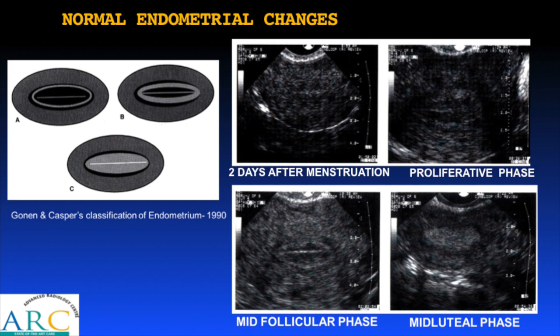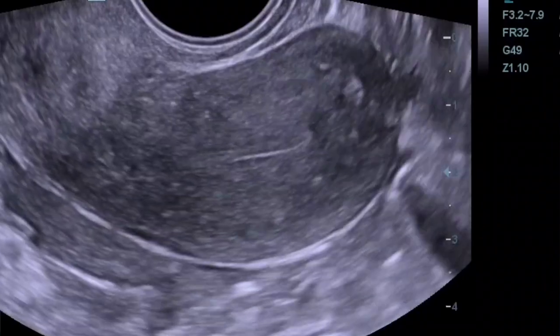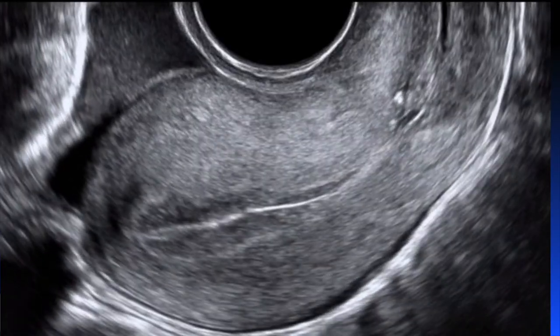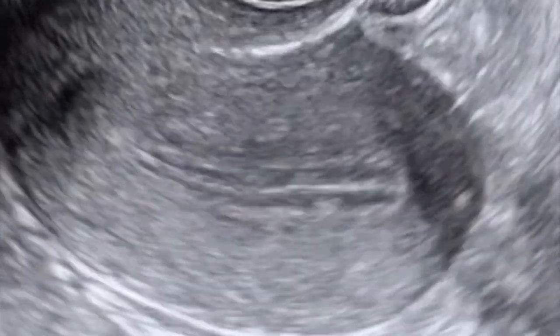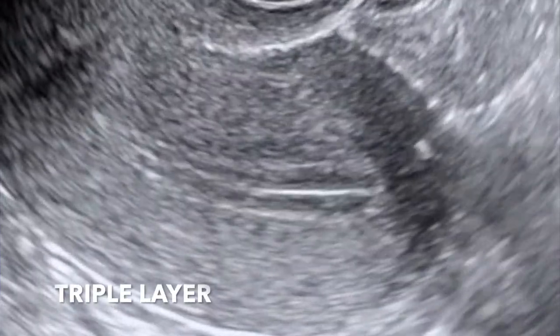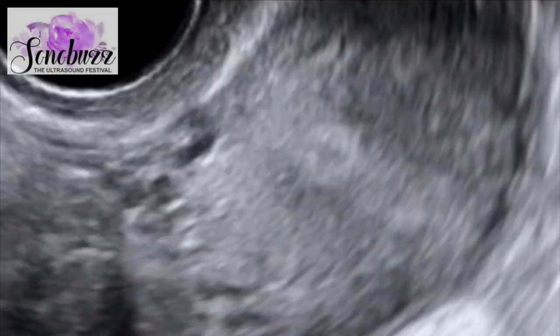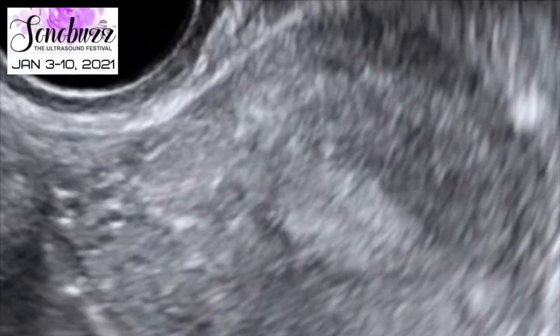The endometrium shows very signature appearances on ultrasound, and it is possible to predict the day of the menstrual cycle from the endometrial image. Casper's classification shows: in the early proliferative stage, a single line representing the endometrial cavity; around day 9–10, a hazy triple layer pattern; in the mid-follicular phase, a well-defined triple layer or five-line pattern; and in the mid-luteal phase, a bright echogenic thick endometrium.